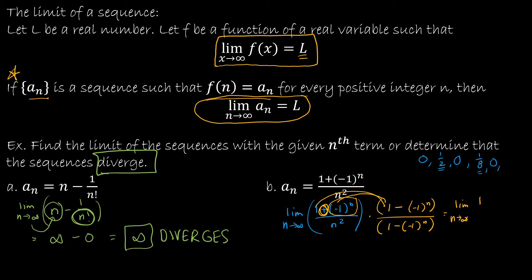Then I'm going to have minus negative 1 to the n — so those two cancel out — and then minus negative 1 to the 2n. And my denominator is n squared times 1 minus negative 1 to the n. So why was that helpful? Because now let's take a look: if I have negative 1 to the 2n, because this exponent is even, taking a negative value to an even power gives a positive value.